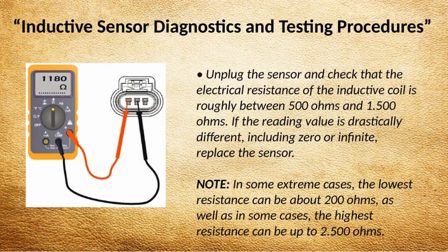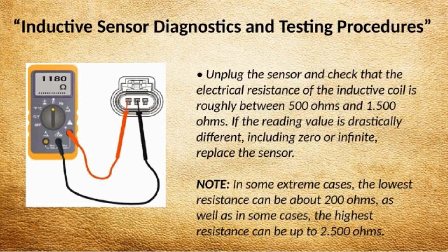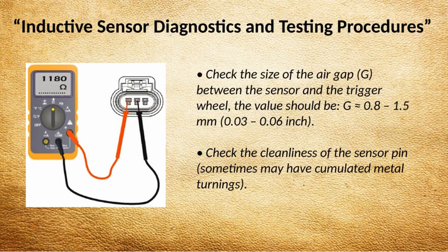Inductive Sensor Diagnostics and Testing Procedures. Unplug the sensor and check that the electrical resistance of the inductive coil is roughly between 500 ohms and 1,500 ohms. If the reading value is drastically different, including zero or infinite, replace the sensor. Note: in some extreme cases, the lowest resistance can be about 200 ohms, and in some cases the highest resistance can be up to 2,500 ohms.